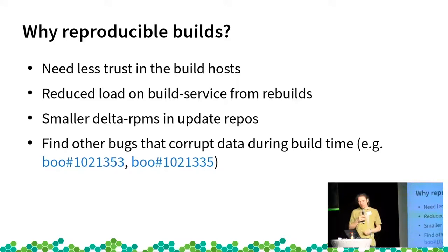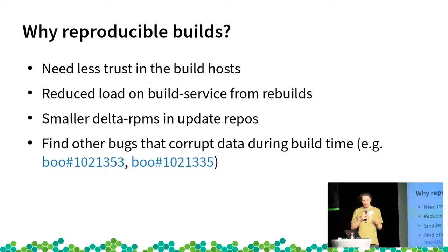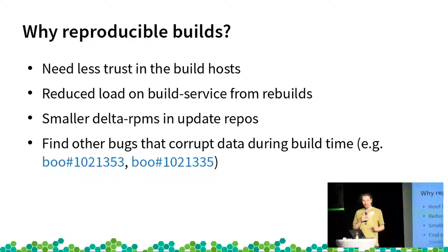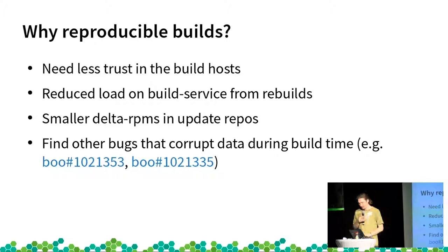For the update channels, we have delta RPMs, and they become smaller when we have smaller diffs — normally if you don't have any change you have zero diff, but if you do have a change you have only a small diff. And sometimes we even find bugs that are completely unrelated — these produced packages with incorrect data, each time a bit different, and that's how I noticed them and got them fixed.